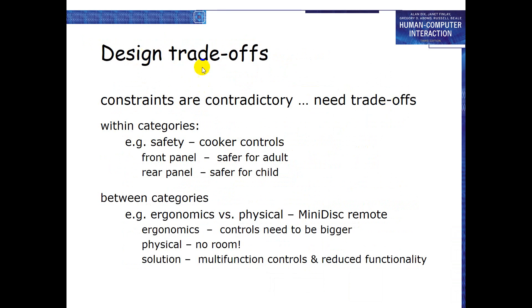The next important topic is Design Trade-off. A trade-off means if you increase one thing, you are forced to decrease another, and vice versa. Constraints we apply are often contradictory — the rules can conflict with each other. Within categories, for example, safety versus usability in cooker controls.